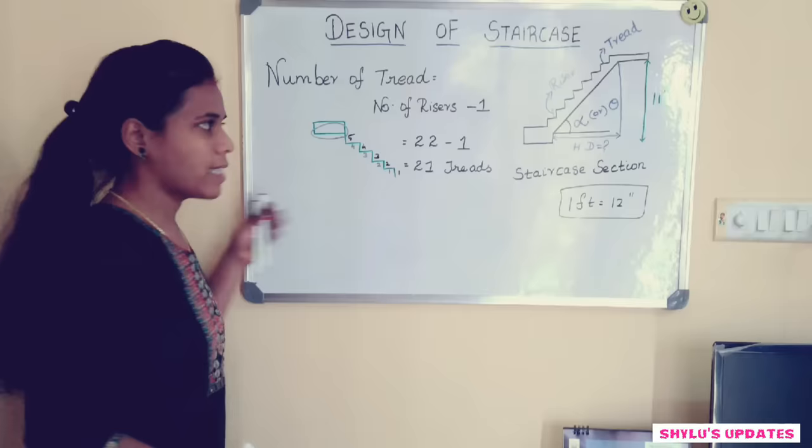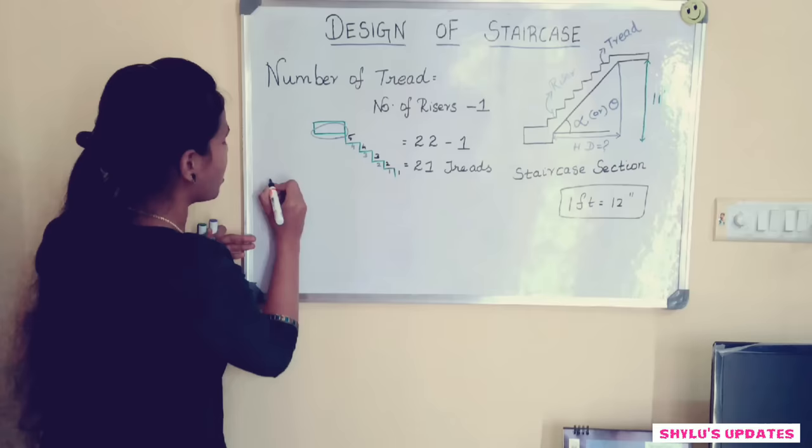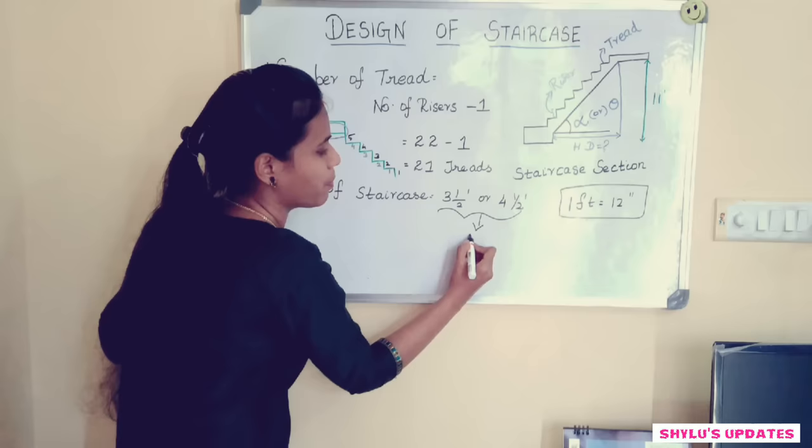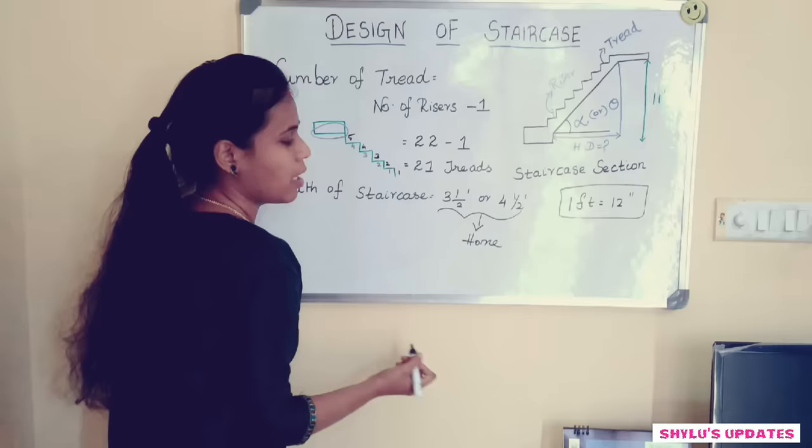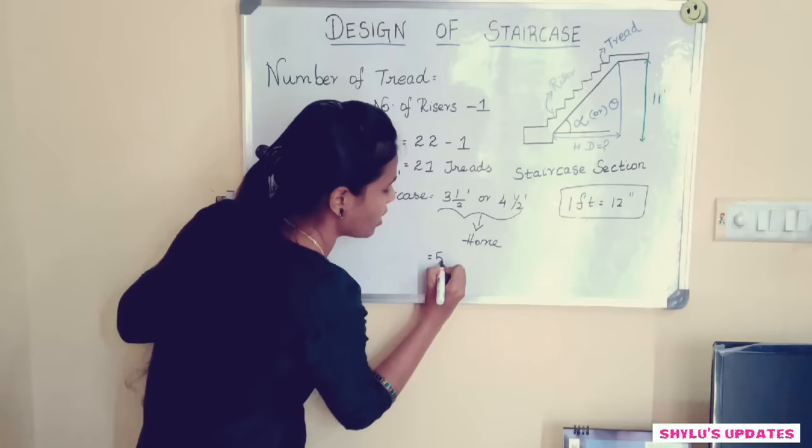For the staircase width, we assume 3.5 to 4.5 feet for a home or any small building. But for apartments or hospitals, the width of the staircase should be 5 feet or 6 feet.